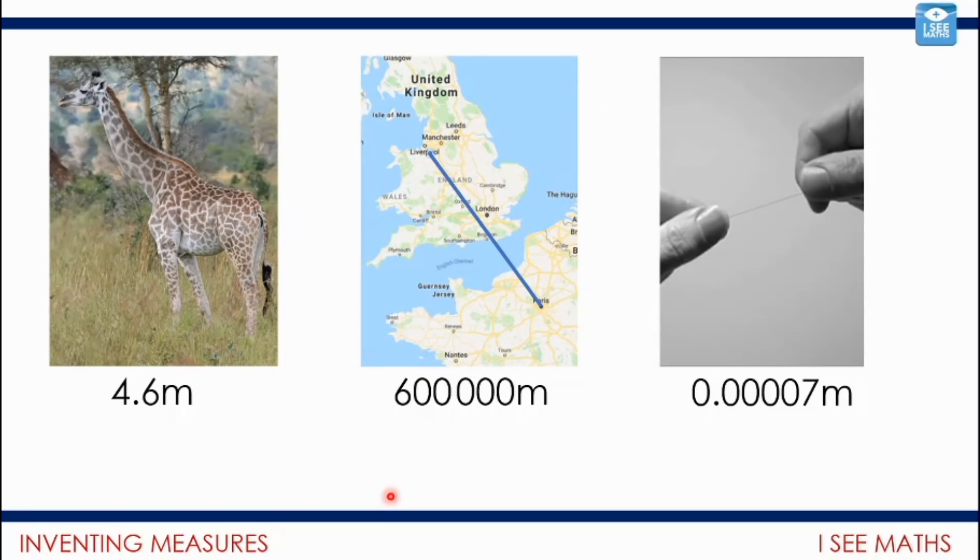If you think about the height of a giraffe, the distance from where I live to Paris, and then the thickness of a piece of thread, measured in meters they are as follows: A giraffe about 4.6 meters tall. From where I live to Paris, 600,000 meters. And this piece of thread is 0.00007 meters thick. Now in the case of the giraffe, a meter is an appropriate unit to measure a giraffe in. I can understand about how big 4.6 meters is. When we have 600,000 meters it's very difficult to picture because that's such a large number. So in that case, it's better really measured in kilometers, 600 kilometers. It's easier for me to picture how far that is.